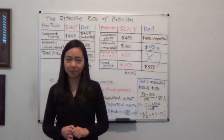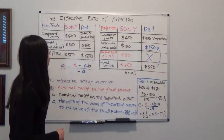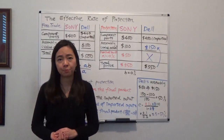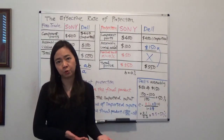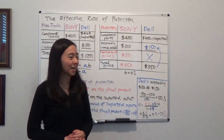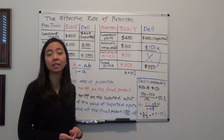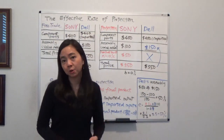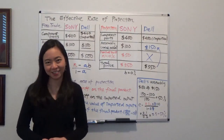Hello everyone, my name is Iris Franz Wujia-Lian Wainu. Today we're going to talk about the effective rate of protection. We know that sometimes the government will impose a nominal tariff on imported goods in order to protect domestic firms, and sometimes the effective rate of protection can be either higher or lower than this nominal tariff. Today we're going to take a look at an example to illustrate this idea.